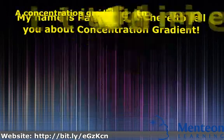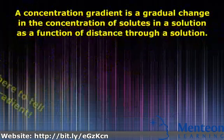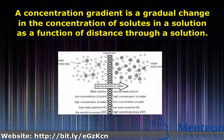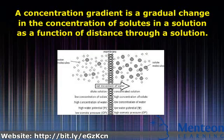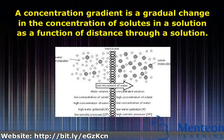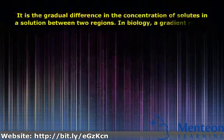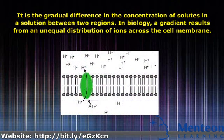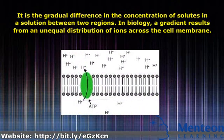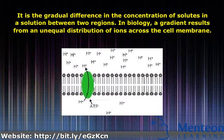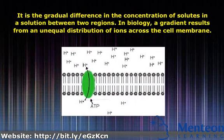A concentration gradient is a gradual change in the concentration of solutes in a solution as a function of distance through a solution. It is the gradual difference in the concentration of solutes in a solution between two regions. In biology, a gradient results from an unequal distribution of ions across the cell membrane.